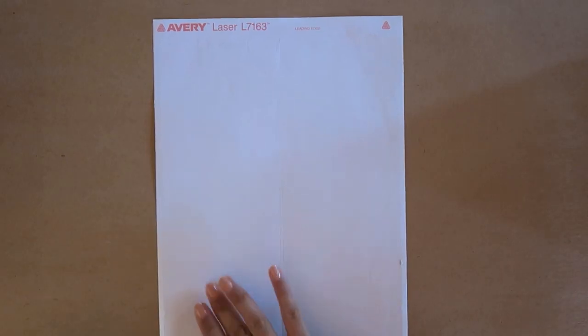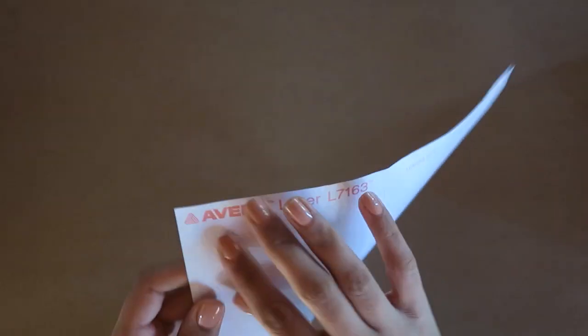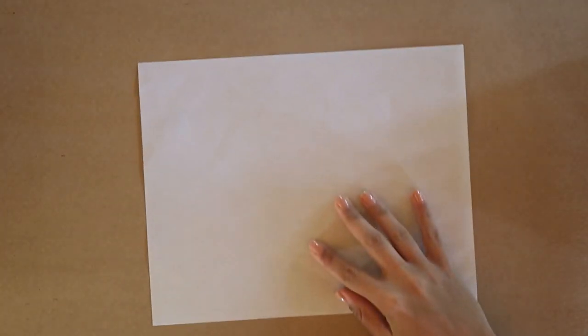Firstly, grab a sticker sheet like these Avery labels. If you don't have time to use the labels first, then peel them all off and place the blank sticker sheet with the shiny side facing up.